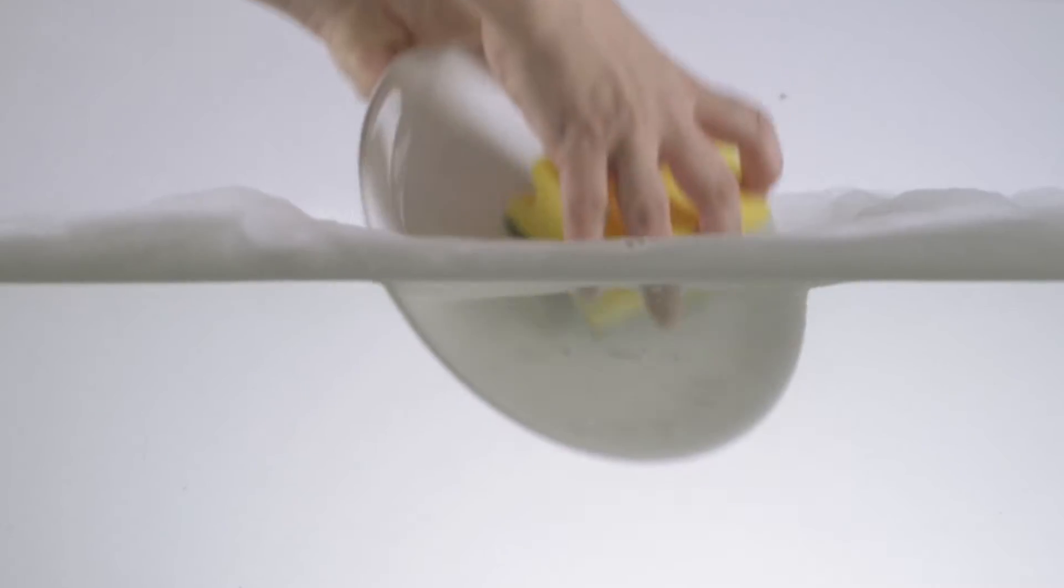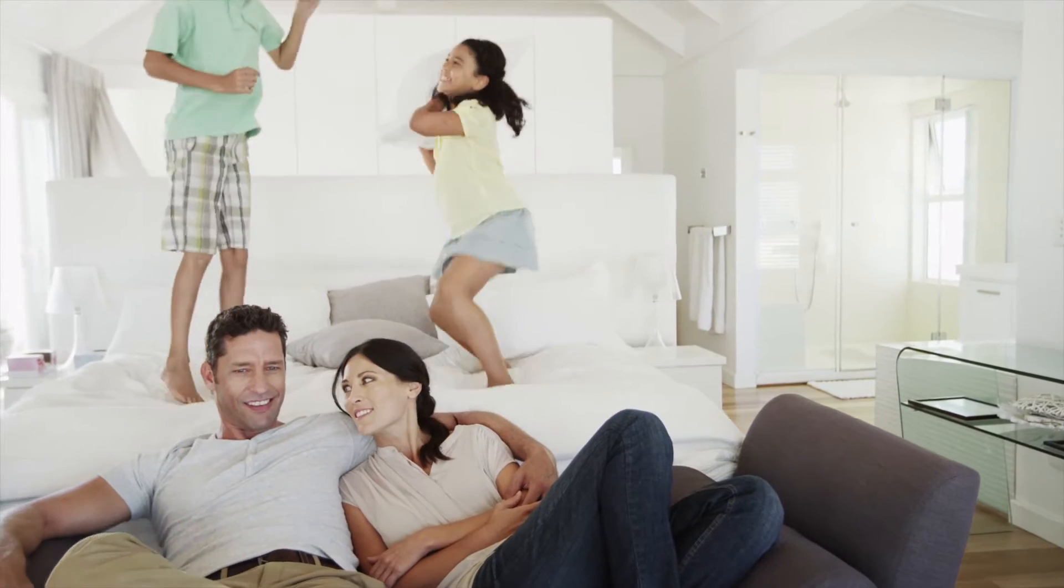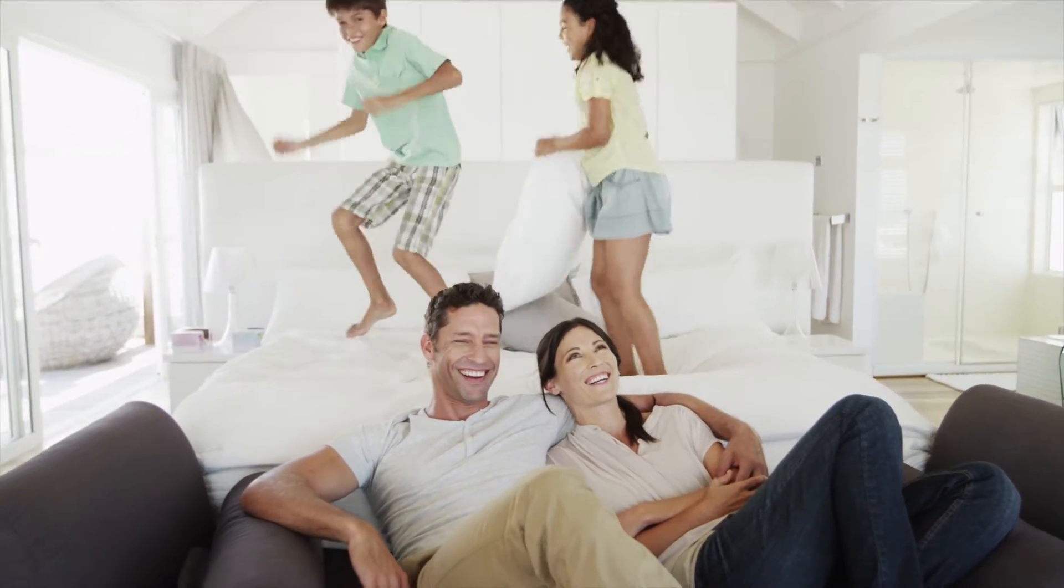Do your car, a kitchen sponge and your mattress have anything in common? In fact, yes, they all heavily rely on flexible polyurethane foam.